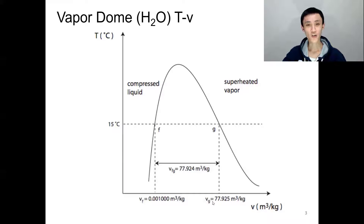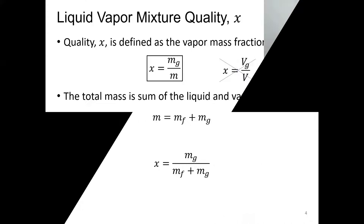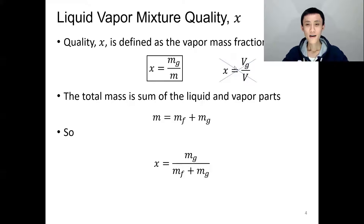The next question is how to determine the mixture. In thermodynamics, we define a term called quality, and we use x to represent it. Quality is defined as the vapor mass fraction of the overall mass — so x equals the mass of vapor divided by the overall mass. It must be mass, not volume.